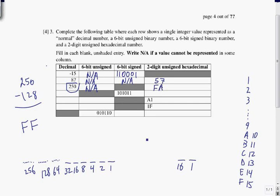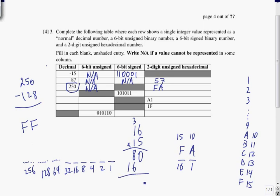Let's verify FA. A is 10, so we have 10 in the ones place. F is 15, so we have 15 in the 16s place. 15 times 16: 5 times 6 is 30, carry 3; 5 times 1 is 5 plus 3 is 8 — so that's 80. Then 1 times 16 is 16 more — wait, it's just 15 times 16 = 240. And 240 plus 10 is 250. Great, confirmed.